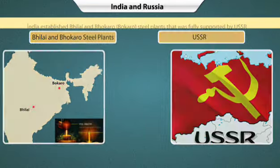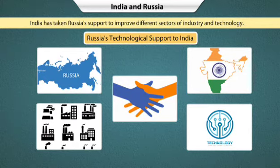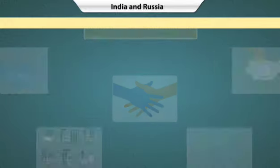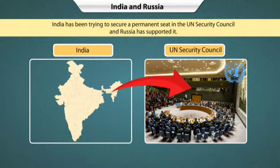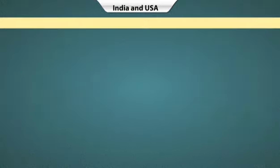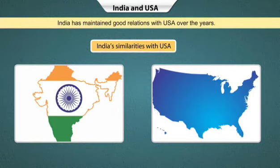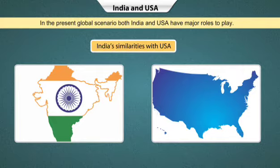Over past many years, India has taken Russia's support to improve different sectors of industry and technology. India has been trying to secure a permanent seat in the UN Security Council, and Russia has supported India in this effort. There are quite a few similarities between India and USA — both are democratic countries and both are large in size. India has maintained good relations with USA over the years and both countries have major roles to play in the present global scenario.